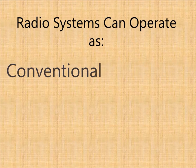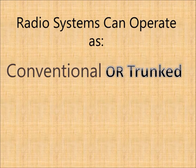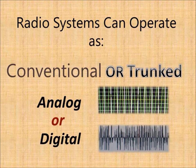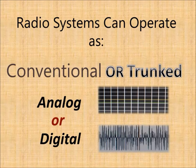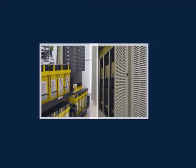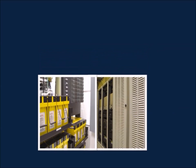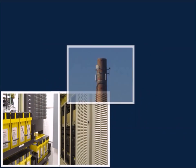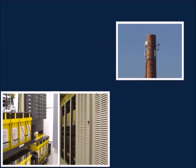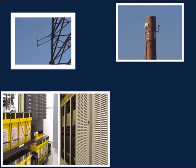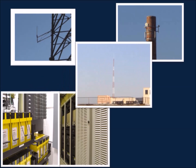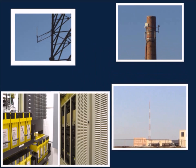Radio systems can operate in a conventional mode or trunked mode, and they can be analog or digital. Base station infrastructure equipment is usually installed where there is an equipment room or shelter with adequate power and security for the equipment, with the antennas installed at high locations to provide maximum coverage, typically on a tower or building rooftop.